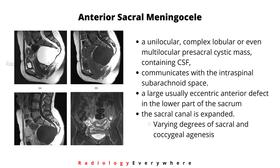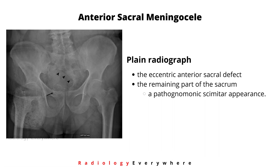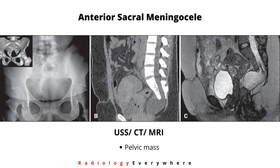The sacral canal is expanded and you can see varying degrees of sacral and coccygeal agenesis. When considering imaging, on plain X-ray you can see the eccentric anterior sacral defect, and the remaining part of the sacrum is visualized as a pathognomonic scimitar appearance.